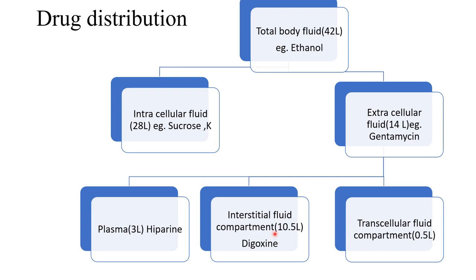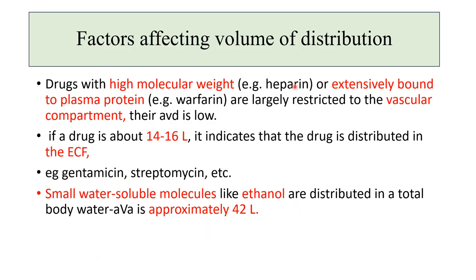Chloroquine has a volume of distribution of 13,000 liters and digoxin has a volume of distribution of 500 liters. Higher molecular weight drugs extensively bound to plasma protein are largely restricted to the vascular compartment and have a very low volume of distribution — examples are heparin and warfarin. A volume of distribution of around 14 to 16 liters indicates the drug remains only in extracellular fluid — examples are gentamicin and streptomycin. Smaller molecular weight water-soluble drugs like ethanol are distributed in total body water with a volume of distribution of approximately 42 liters.